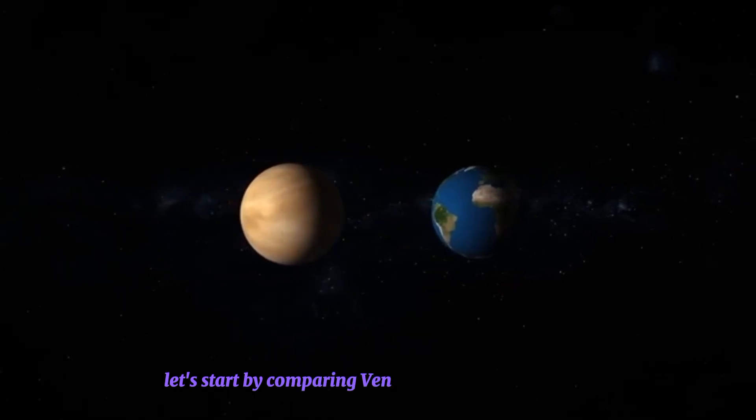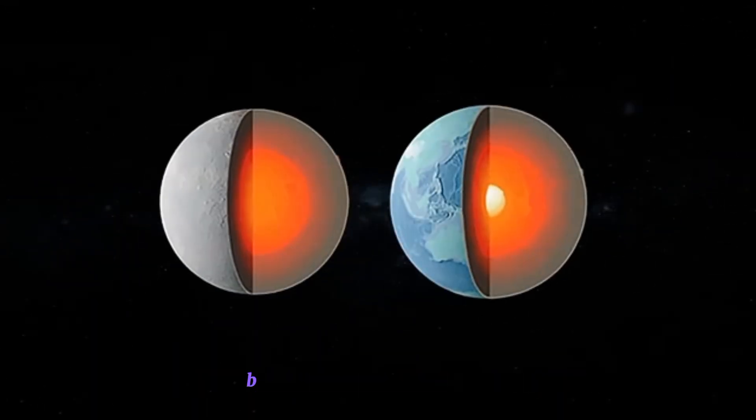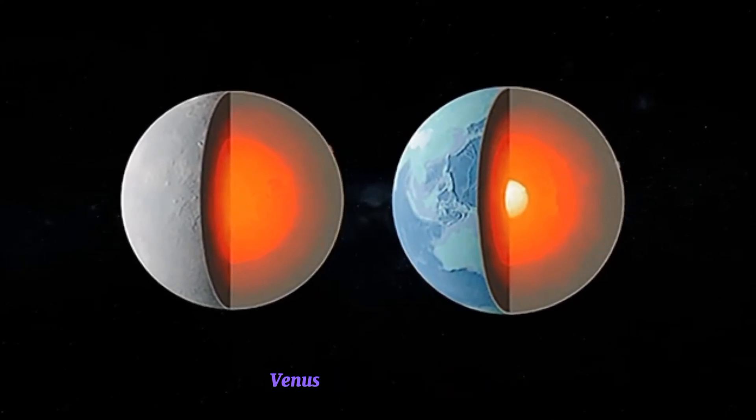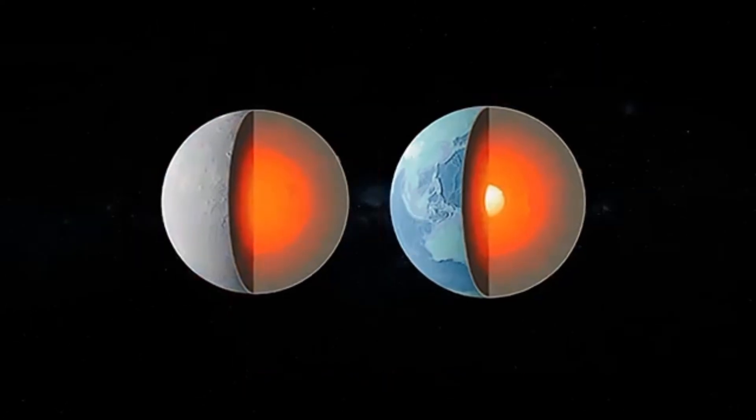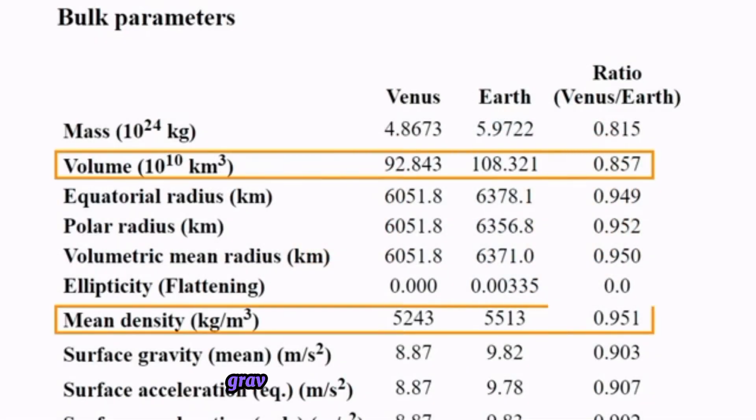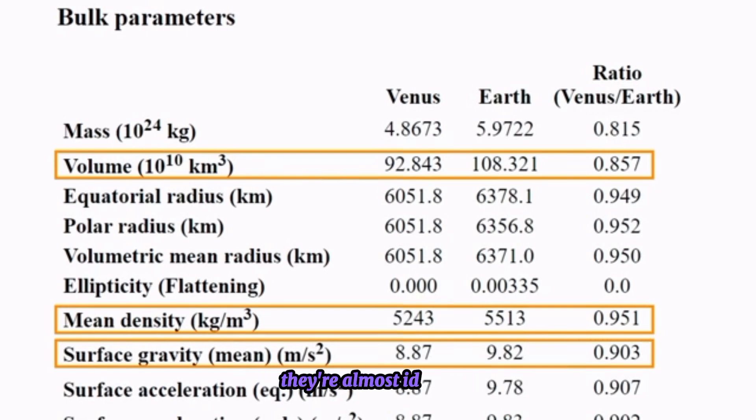Let's start by comparing Venus and Earth side by side. Both planets have an active core surrounded by a thick crust. Venus has an iron-nickel core just like Earth and other rocky planets like Mars and Mercury. In fact, when you compare the size, gravity, and density of Venus to Earth, they're almost identical.